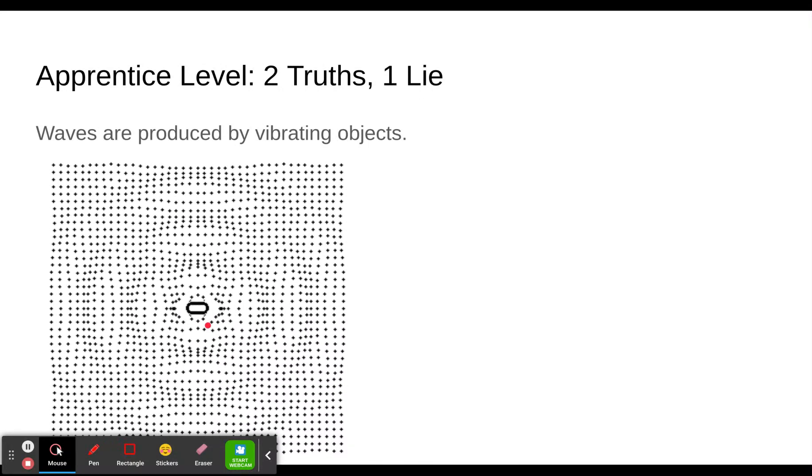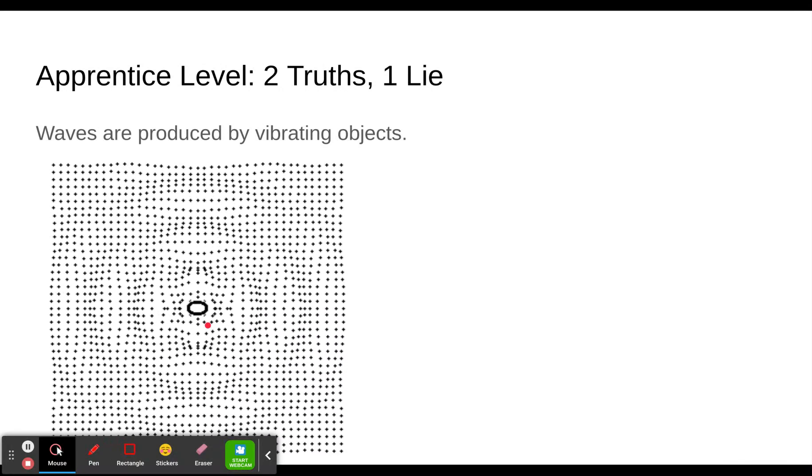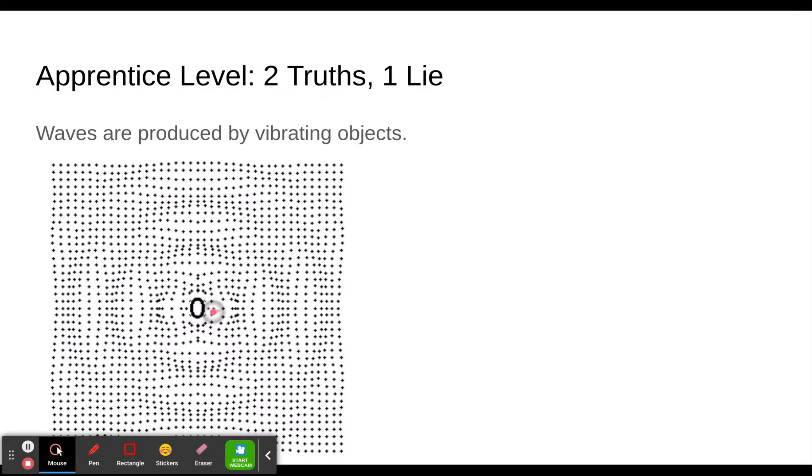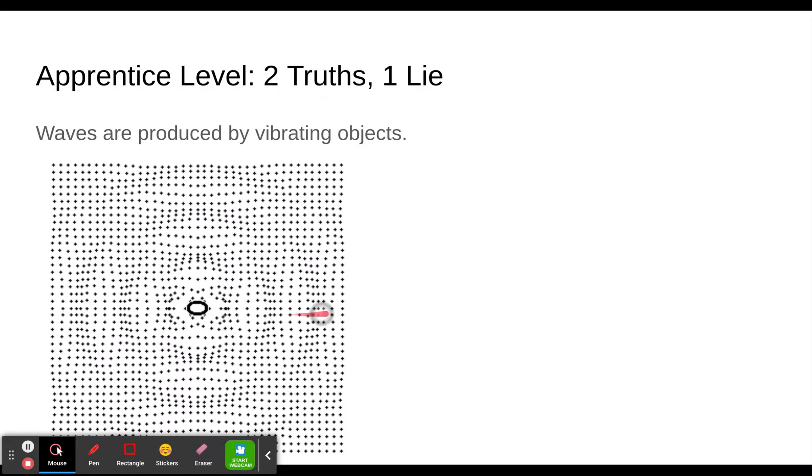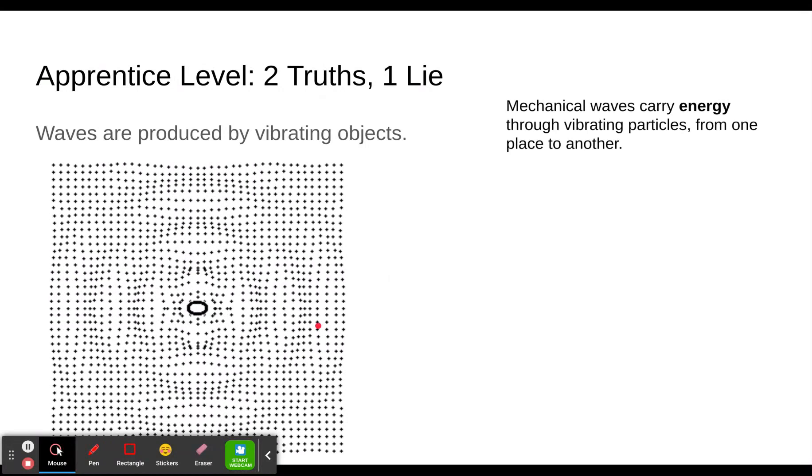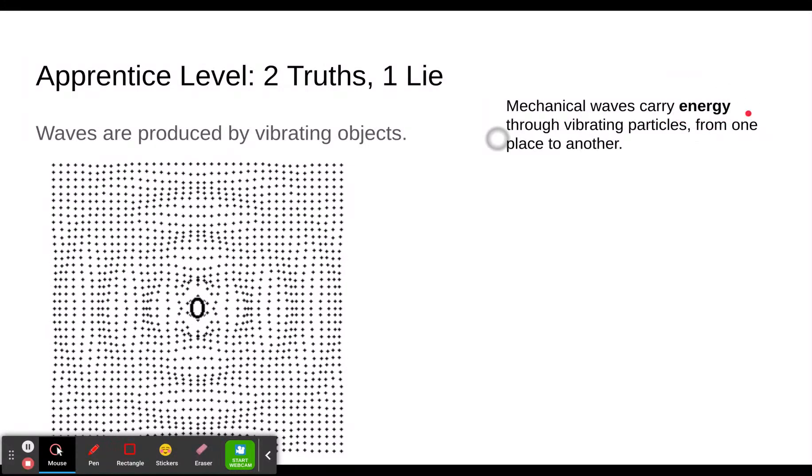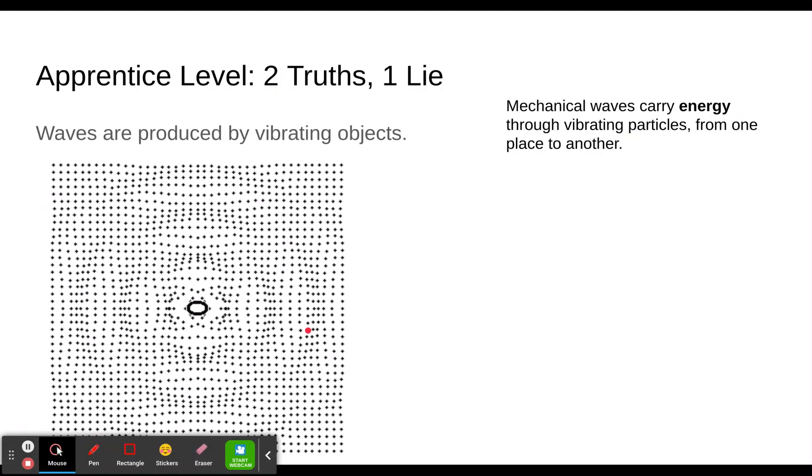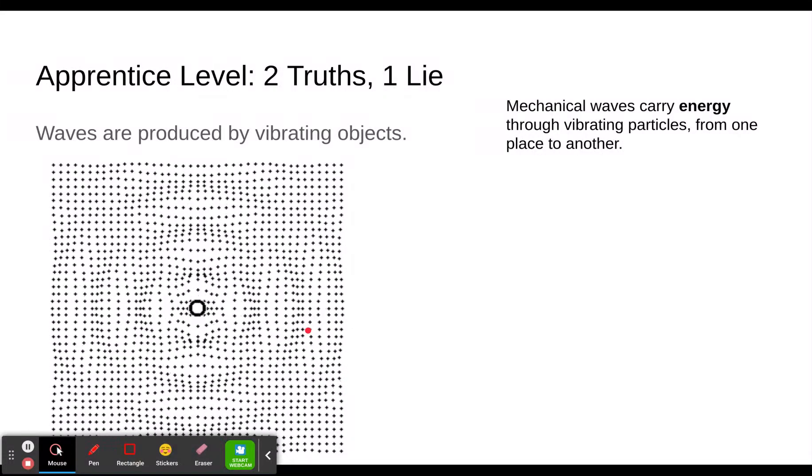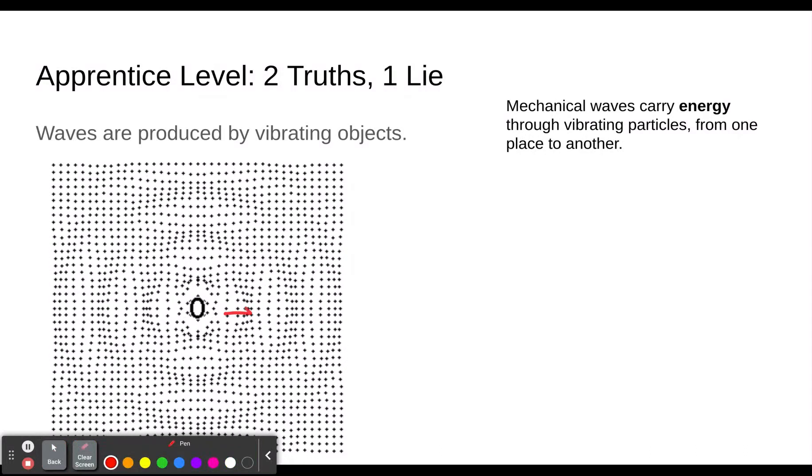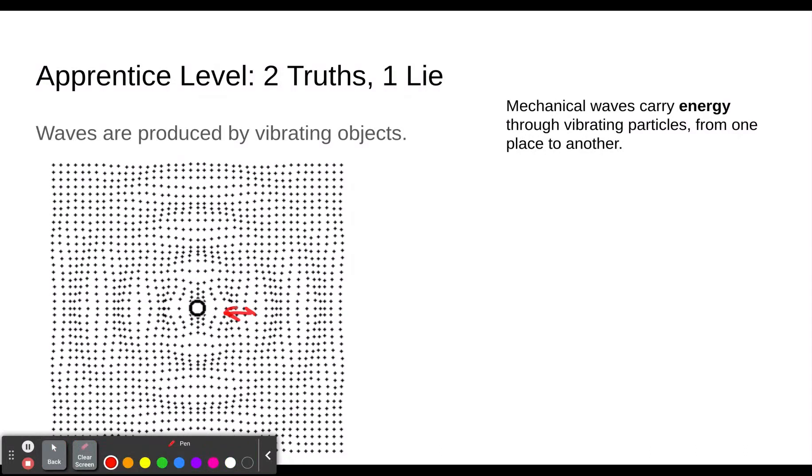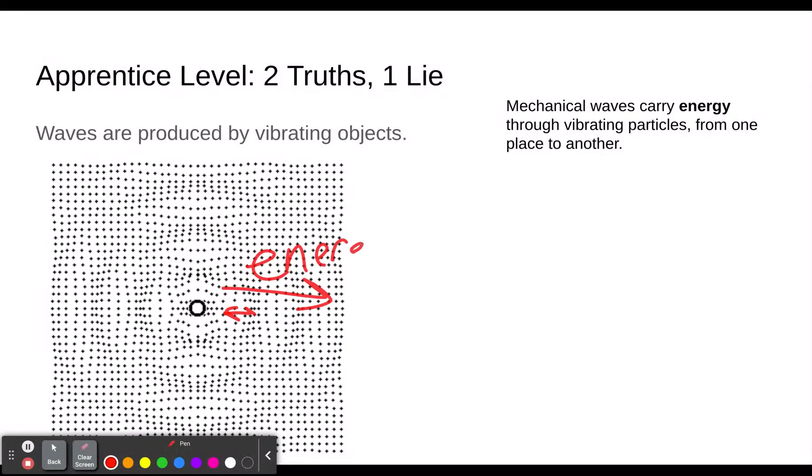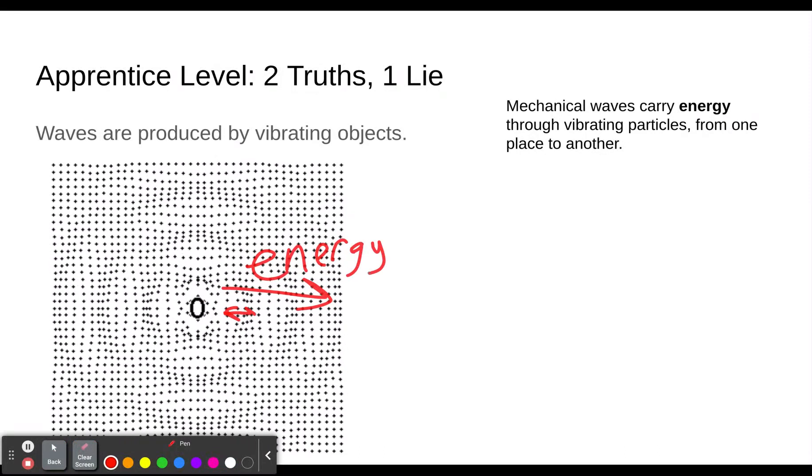If you look carefully, you can see that a given molecule is just moving back and forth. The molecules don't move out here to the outside, they just kind of go back and forth, and the energy is what travels out here. That's important: mechanical waves carry energy through vibrating particles from one place to another, so they carry the energy out here to the outside.